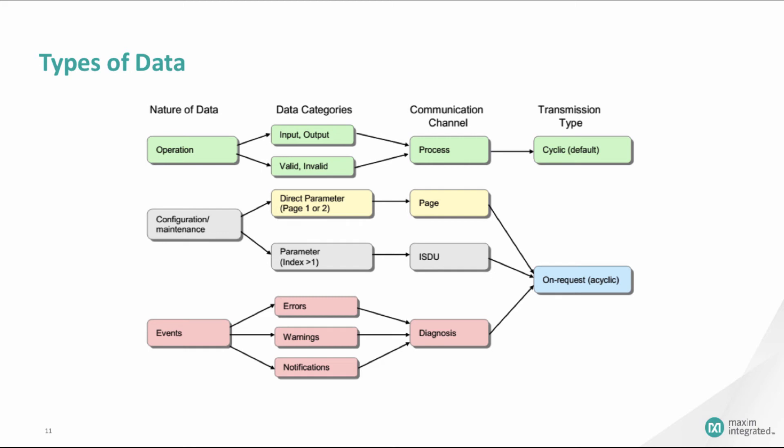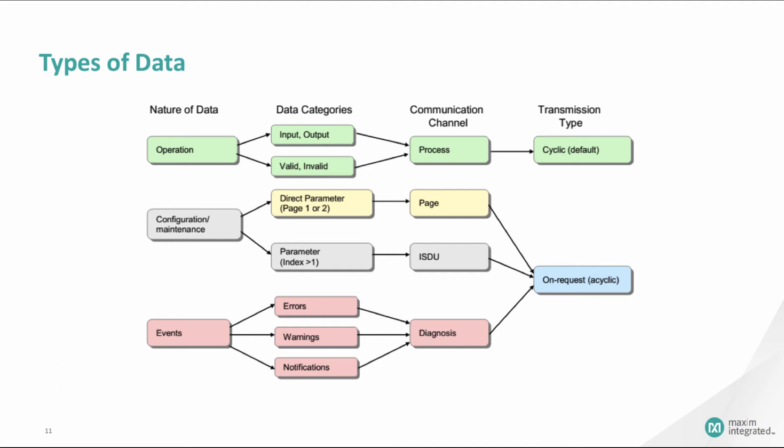IO-Link communication is either cyclic or acyclic. Cyclic data typically involves normal operation — for example, the sensor sending data to the master. Acyclic data can take one of two forms: the first is configuration or maintenance information, such as the master configuring the device after power-up or requesting device configuration before it powers down. The second is event-triggered. Events are reported with three levels of severity: notifications, warnings, and errors — for example, when a fault or error is triggered.